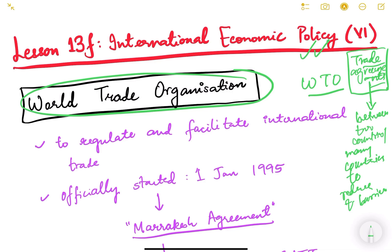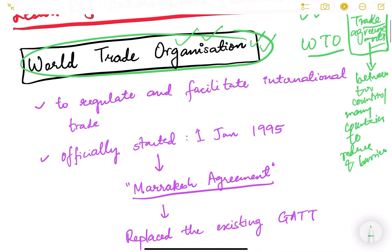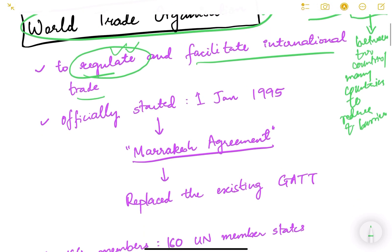When it comes to trade agreements, they are limited to those particular countries where the agreement exists. The World Trade Organization is an organization formed to globalize free trade — an idea where no countries should be discriminated against and every country should benefit from free trade. The rich developed countries should not discriminate against poor and developing countries. The purpose of WTO is to facilitate and regulate international trade. It officially started on 1st January 1995.